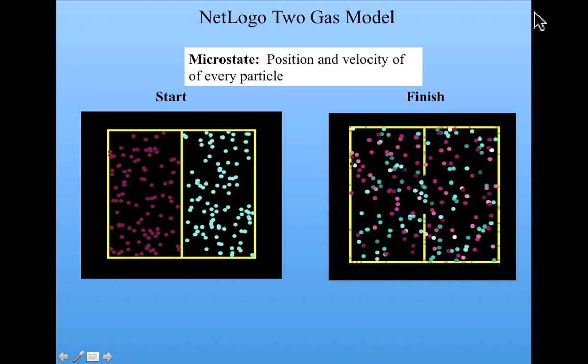Well, in our new language of microstates and macrostates, we can say that the microstate of the system is the position and velocity of every particle. That's kind of like our position and identity of each of the fruits in the slot machine.